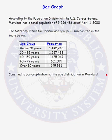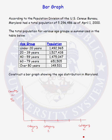We are to construct a bar graph showing the age distribution in Maryland. A bar graph has two axes. On the x-axis, we put different categories, and on the y-axis, we either graph the counts of something or the percents in each category. In our problem,